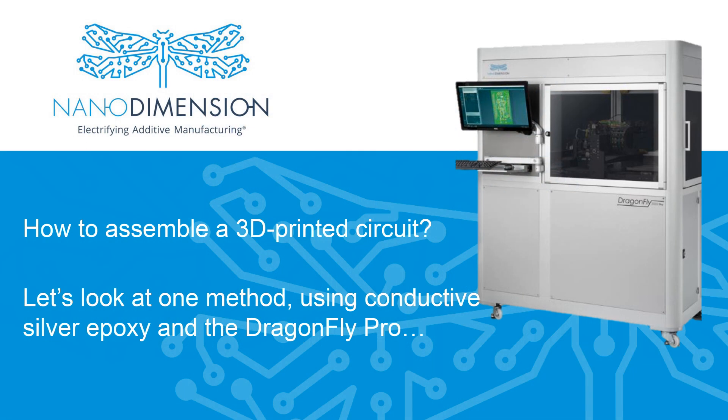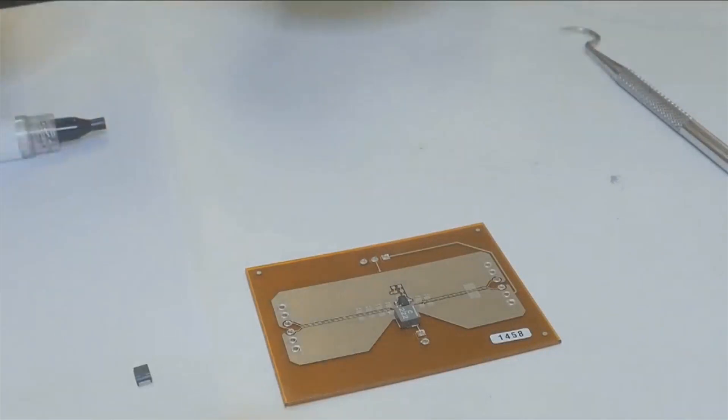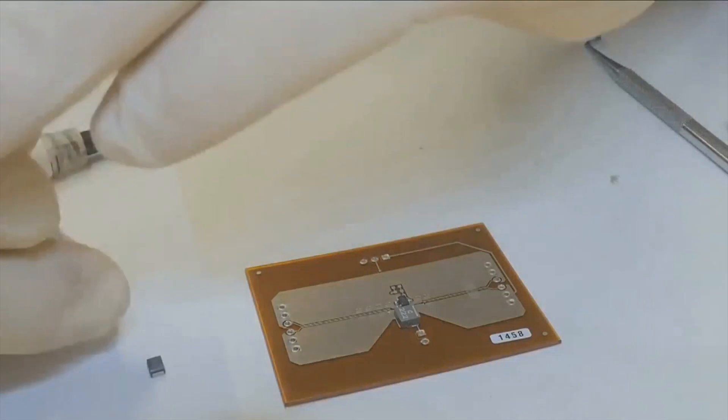With NanoDimension's Dragonfly additive manufacturing system, you can assemble components in many different ways using reflow, vapor phase, manual soldering, or silver epoxy. Let's take a closer look at silver epoxy assembly.